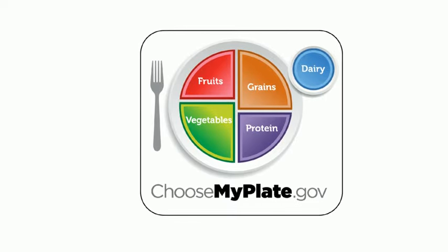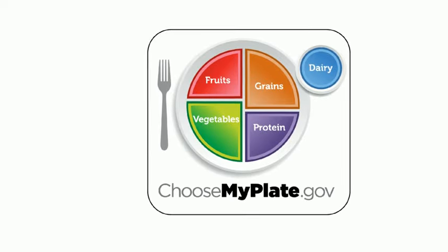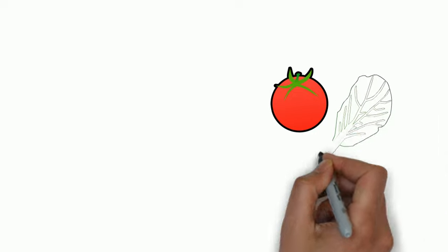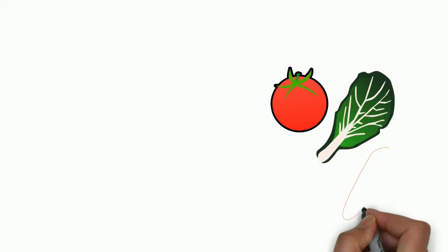For more information on how to make better food choices, go to www.choosemyplate.gov. You will learn how to build a healthy meal. Fill half of your plate with vegetables, like salad, broccoli, tomatoes, or carrots. The brighter the color, the more nutrients.